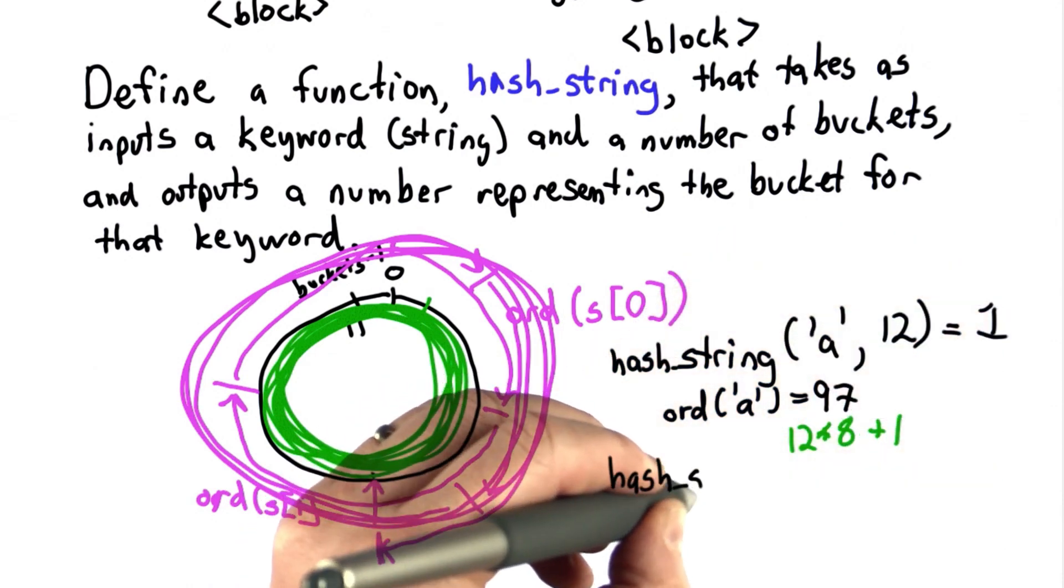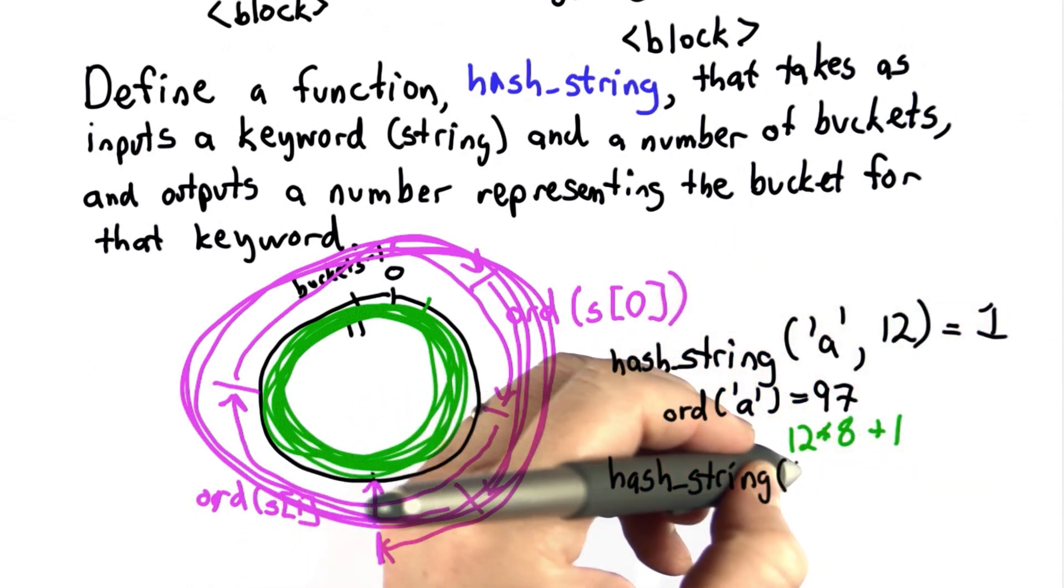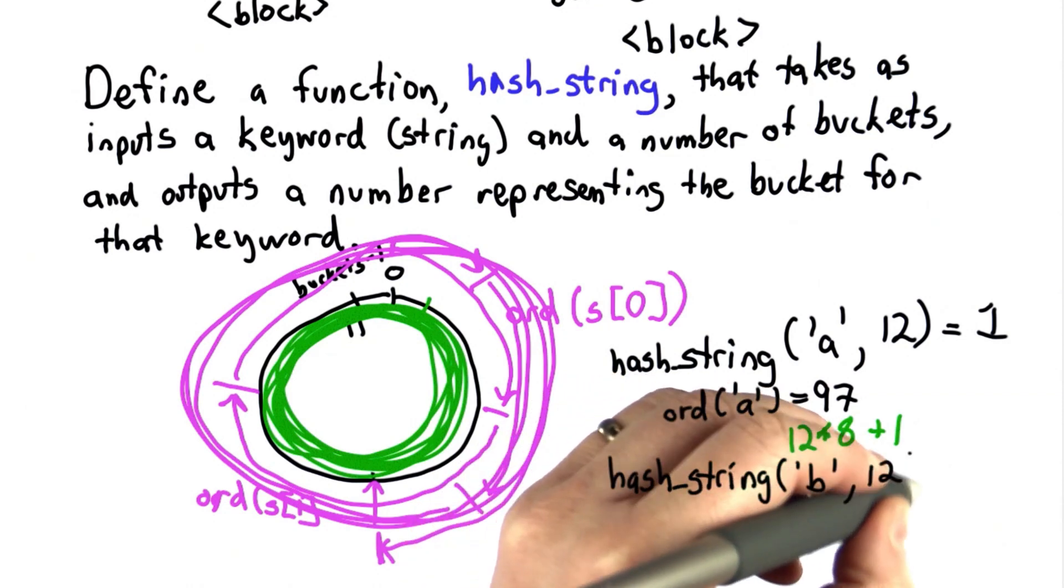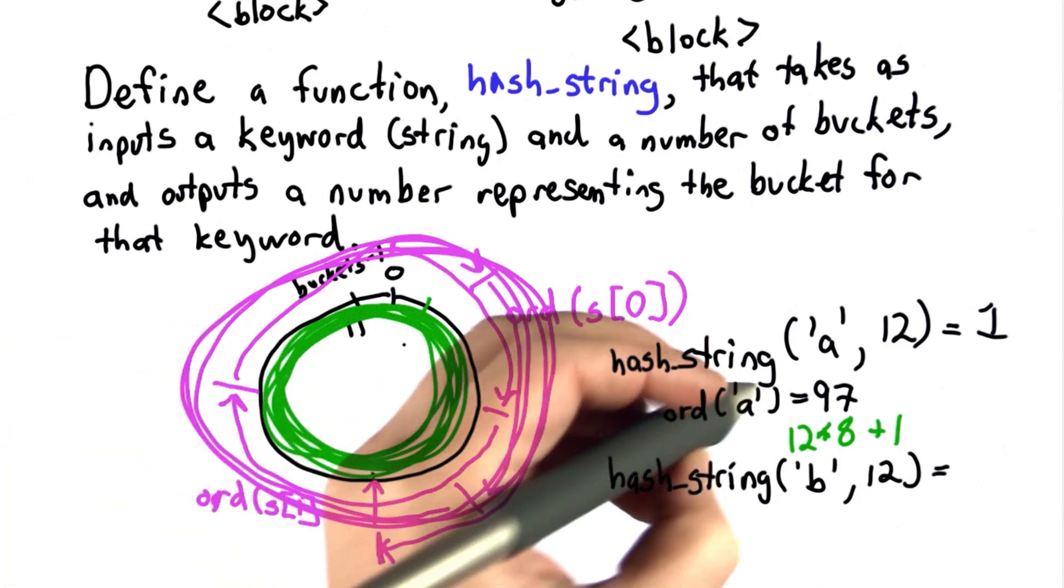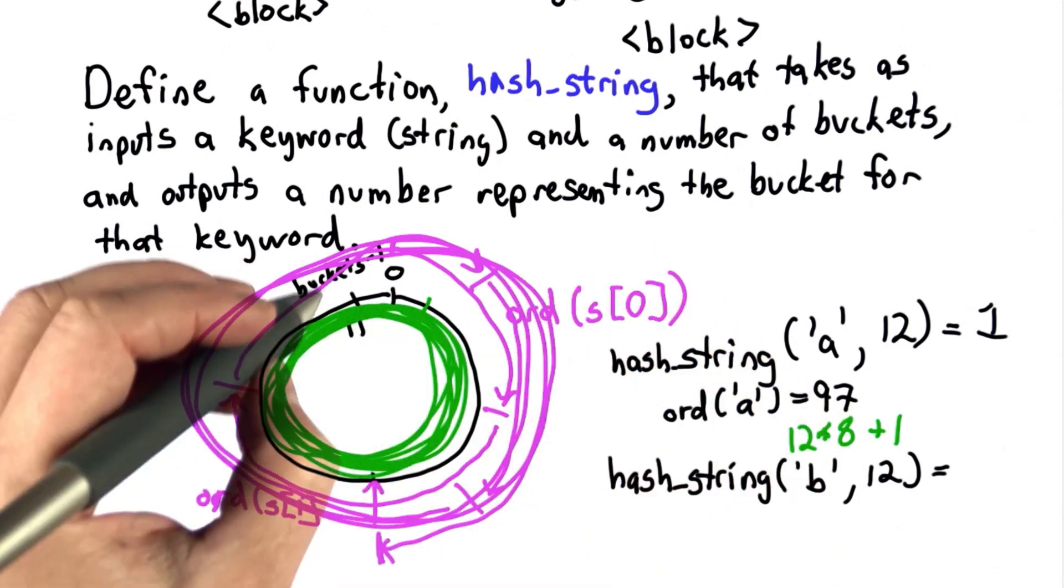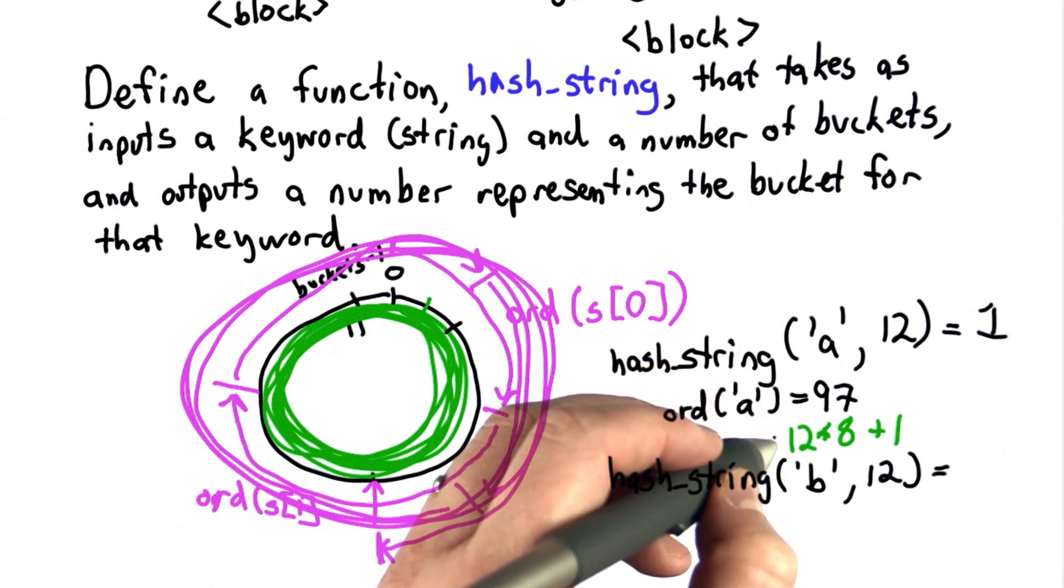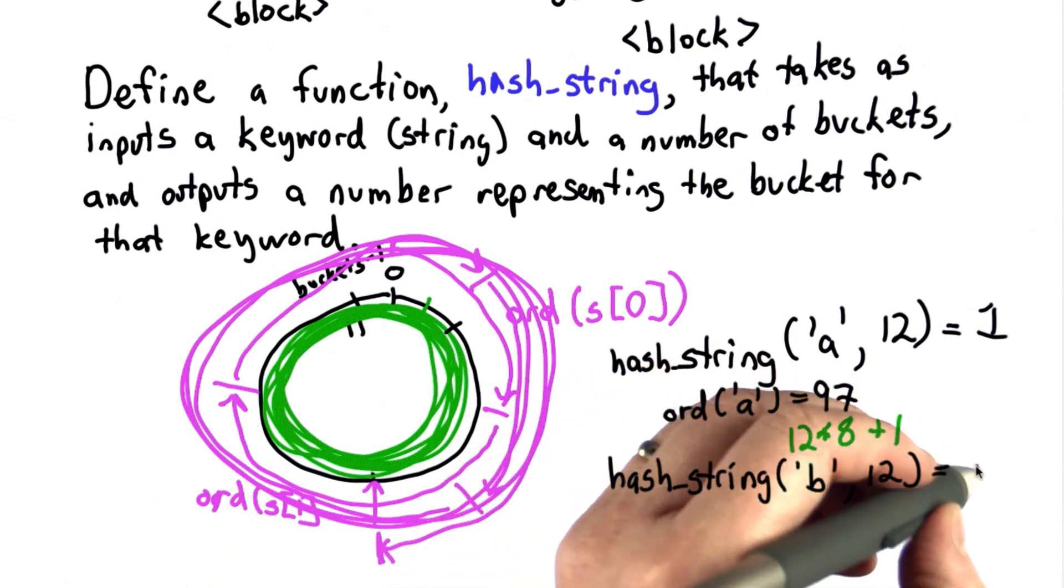As another example, if we tried hash_string where the string is the single letter B, also with 12 buckets, that's going to also go around the circle 8 times because the ord of B is 98, but it's going to end up in bucket 2, since that's 96 plus 2, which will end up in bucket 2.